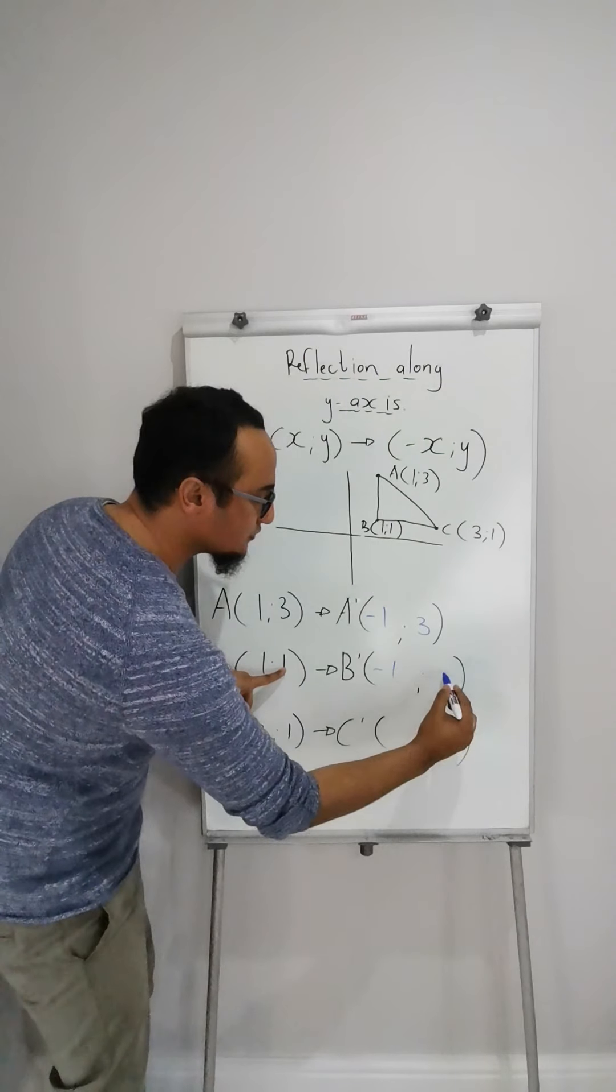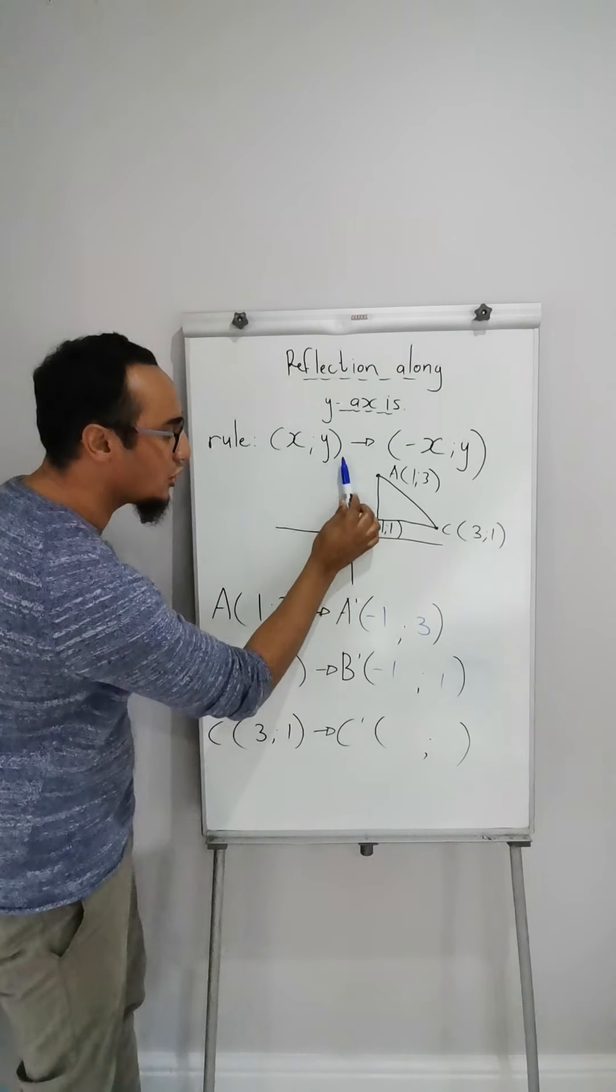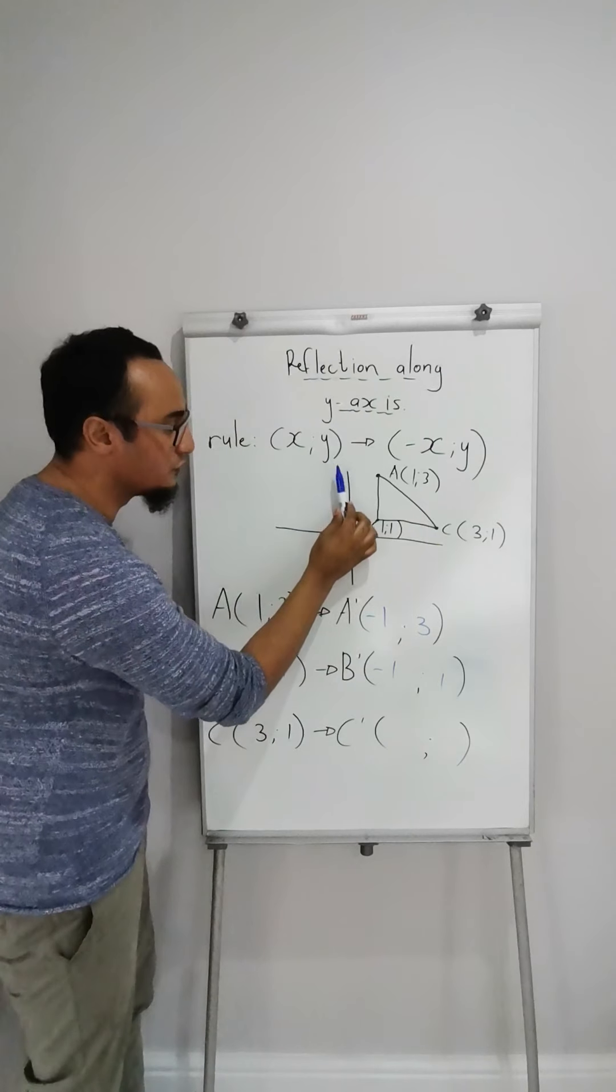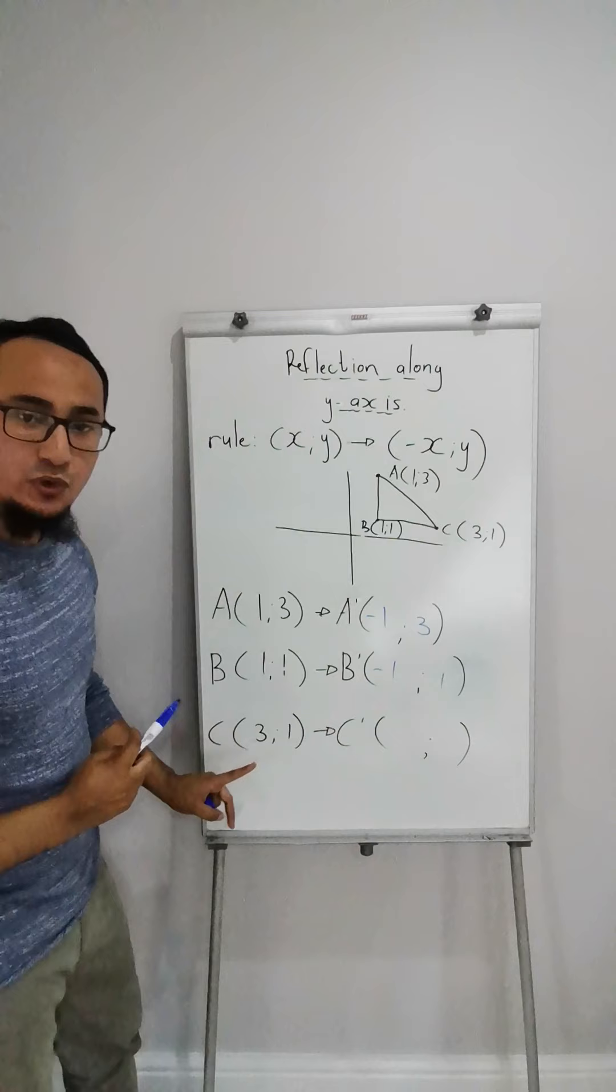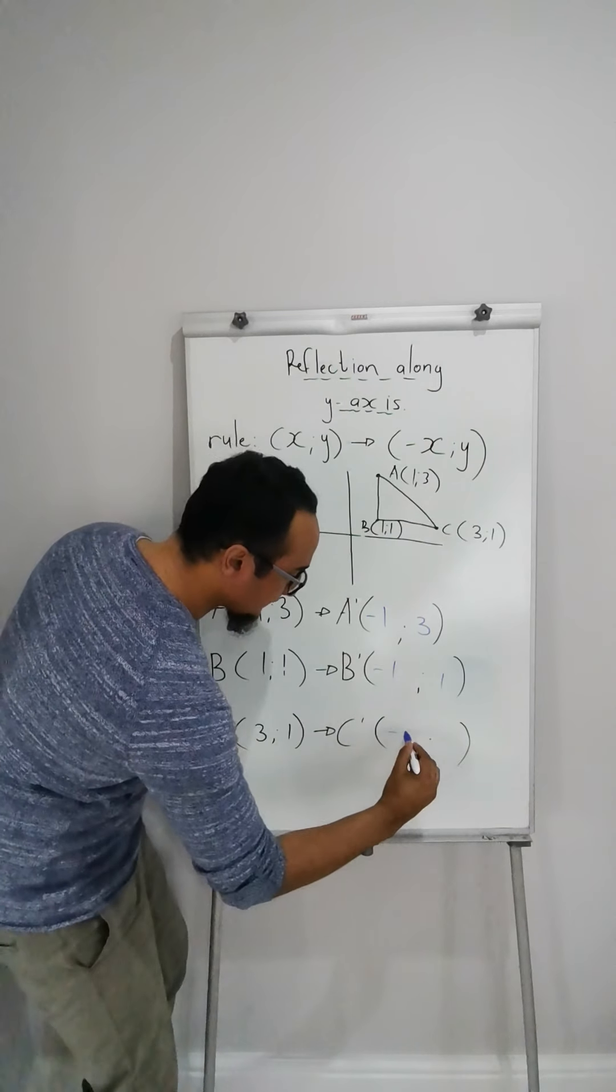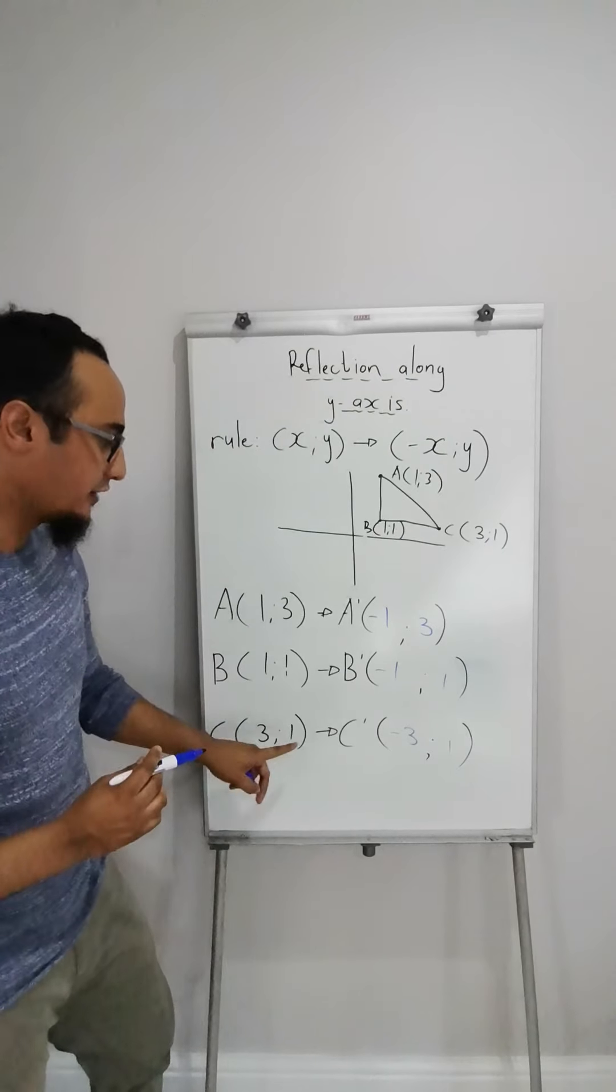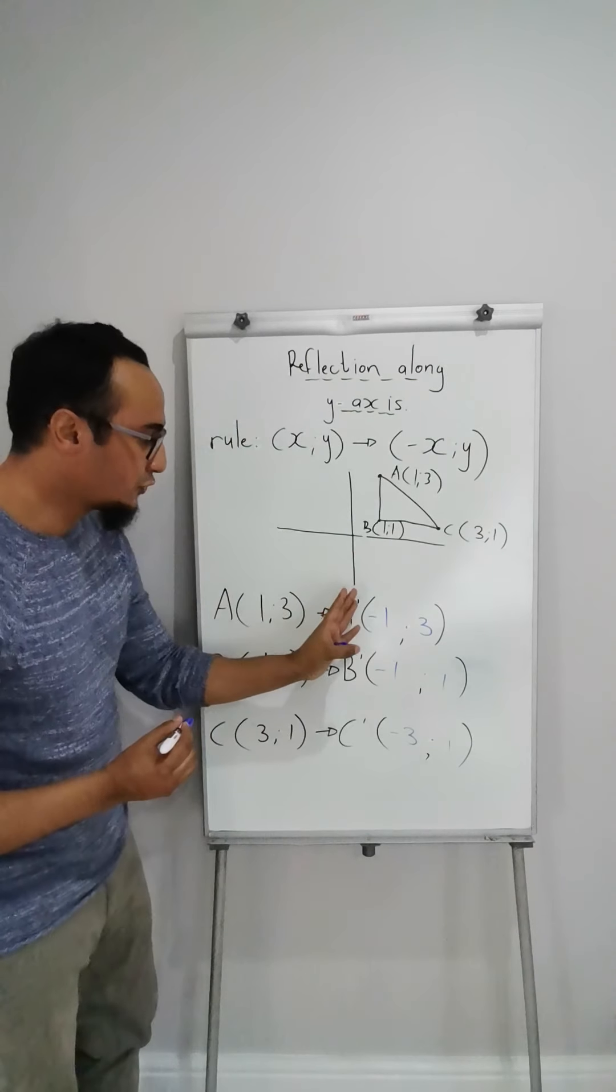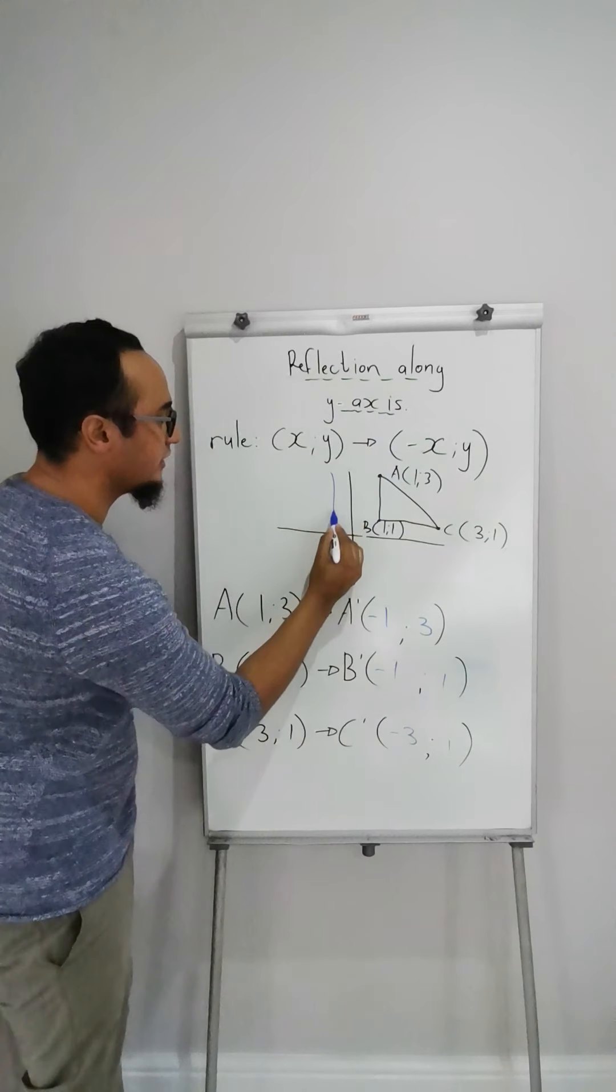The one thing you need to know is the rule for reflection along the y-axis. Reflection means the point or the object is being reflected along the y-axis. This is the y-axis over here which means that your diagram is going to flip over your y-axis and it's going to lie somewhere over there, right?